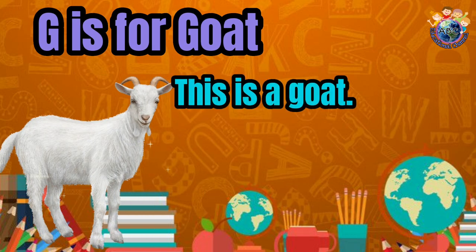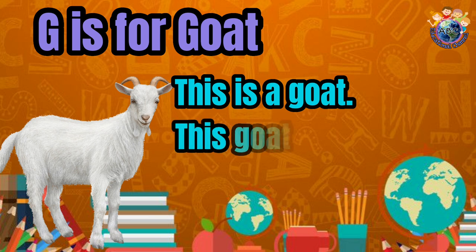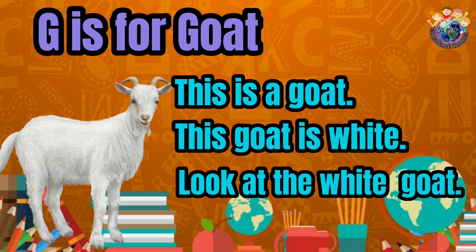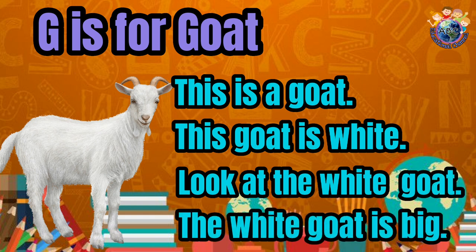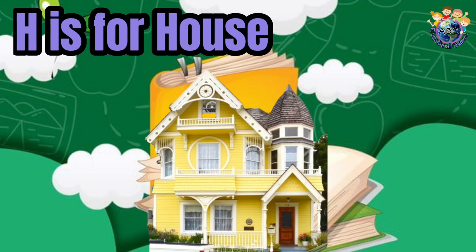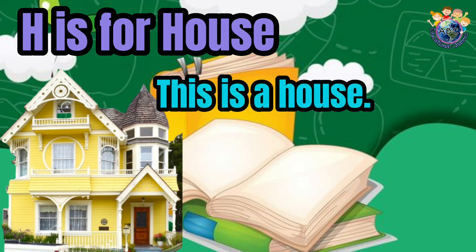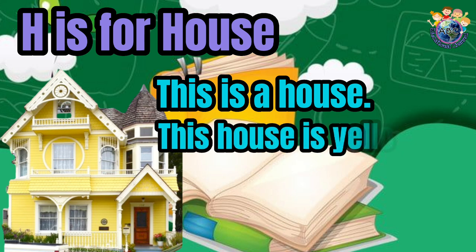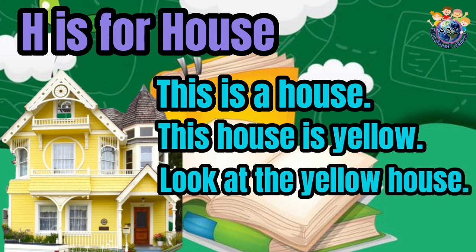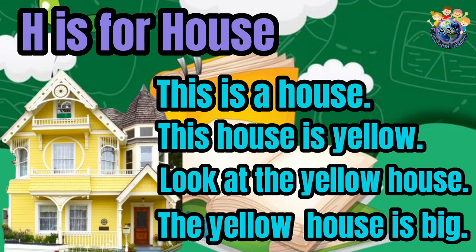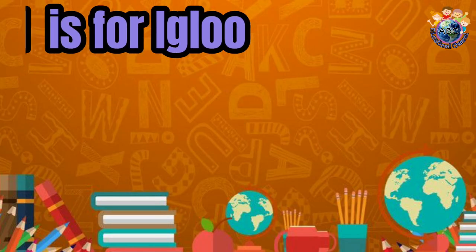G is for goat. This goat is white. Look at the white goat. The white goat is big. H is for house. This is a house. This house is yellow. Look at the yellow house. The yellow house is big.